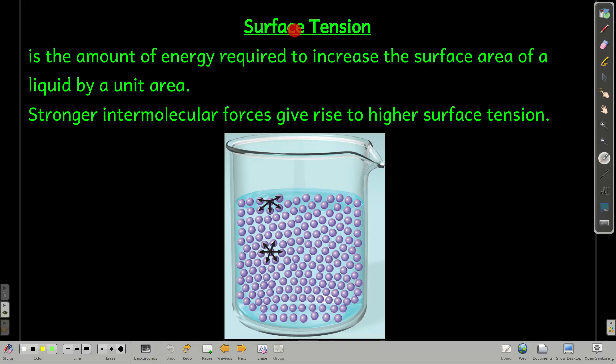The first property is called surface tension. This is the definition: how much energy it takes to increase the surface area by unit area, by a square centimeter or something like that. The first thing to remember is that stronger intermolecular forces mean higher surface tension.